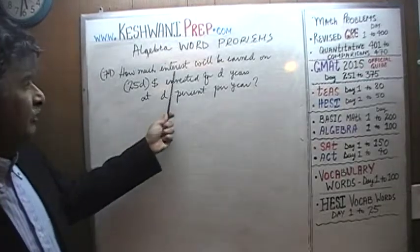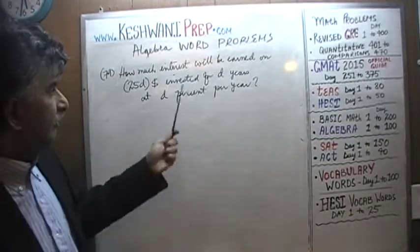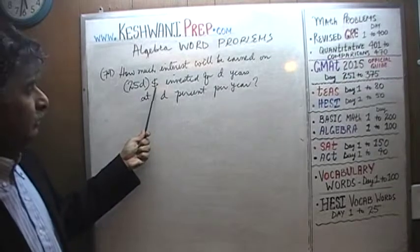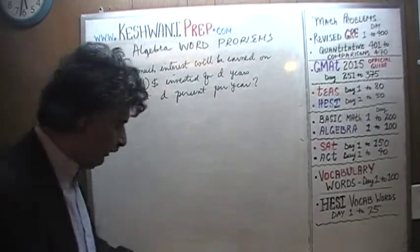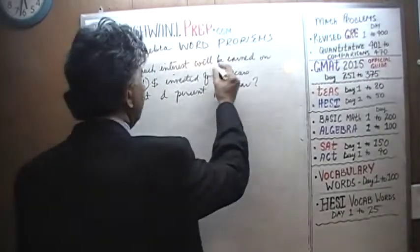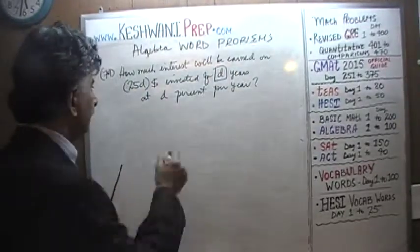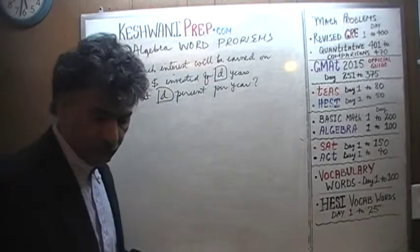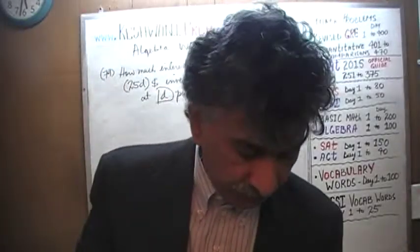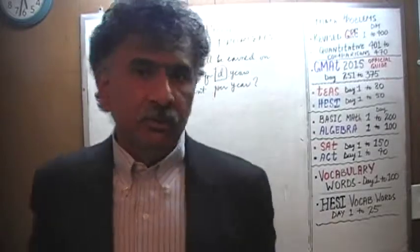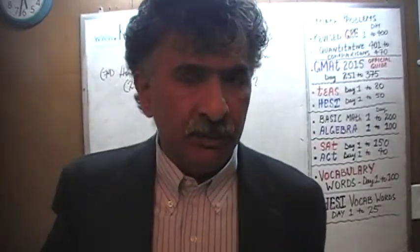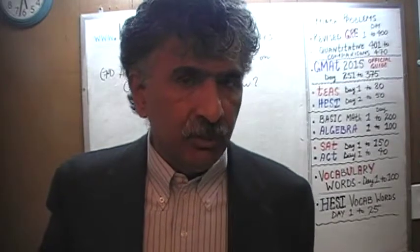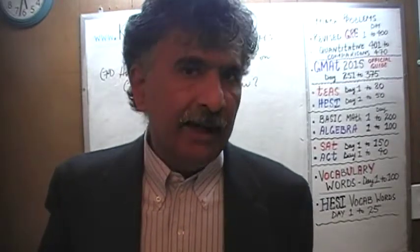We are being asked: how much interest will we earn if we were to invest 25 times D dollars for D number of years at D percent per year? D is some unknown quantity — we don't know what it is, because it's an algebra problem. We're going to invest 25 times D dollars for D number of years at D percent per year.